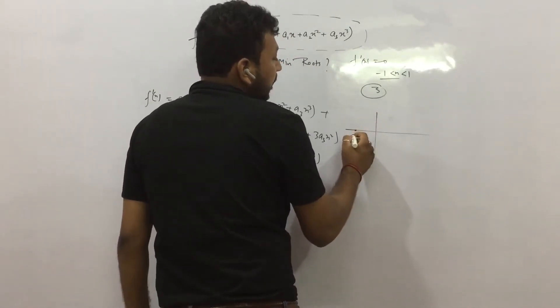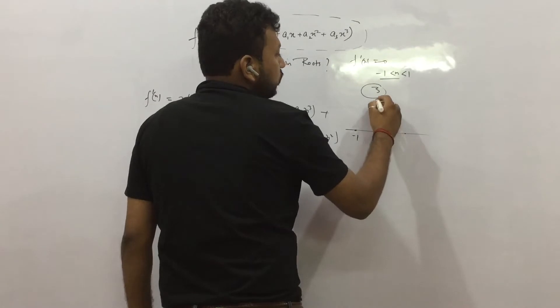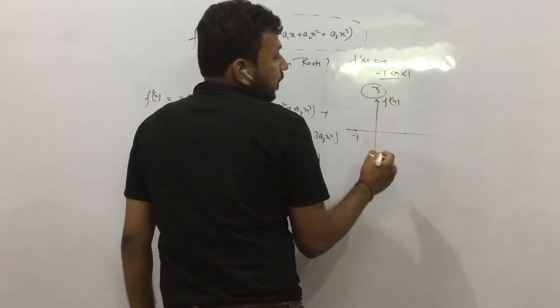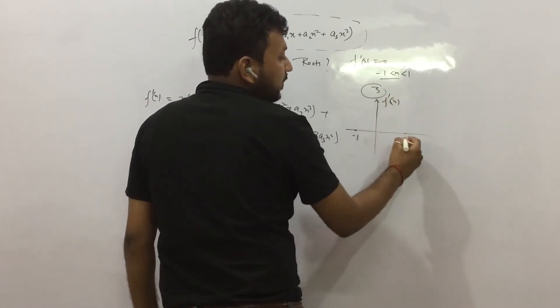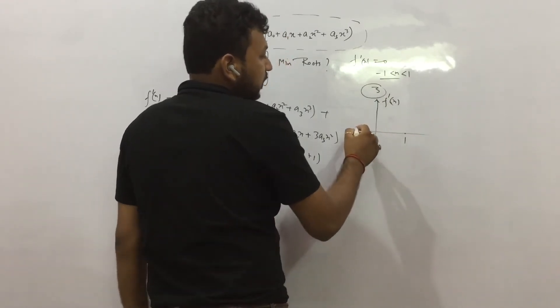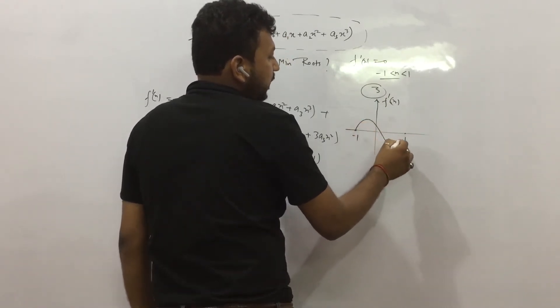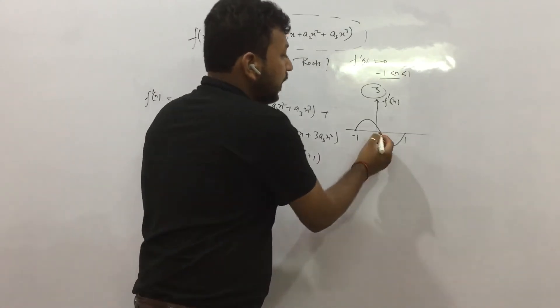So f'(x) is 0 at 3 points. That means -1... So this is the graph of f'(x). Not f(x). So f'(x) is 0 at 3 points: 1, 2, and 3.